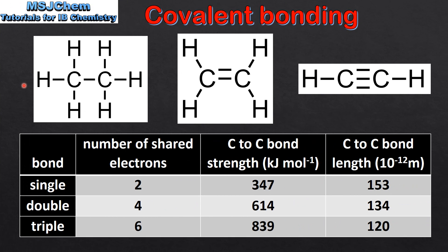Next we look at single, double and triple covalent bonds. Here we have the structural formula for three molecules. On the left we have ethane, which has a carbon to carbon single bond. In the middle we have ethene, which has a carbon to carbon double bond. And on the right we have ethyne, which has a carbon to carbon triple bond.